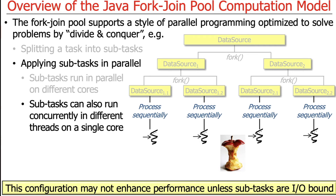If you only have a laptop with a single core, the Java ForkJoin Framework will still work — you just won't get a very big speedup, because one core is not likely to give you a performance boost unless your subtasks are heavily I/O bound. We'll talk more about that later, but chances are you have a laptop with more than one core.